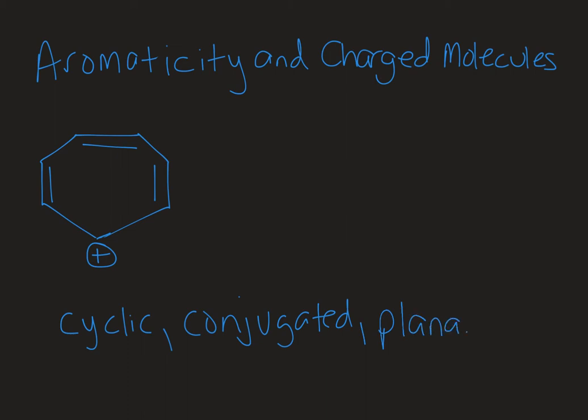And if all of those requirements are met, then we can count the number of electrons in our system and see if we have an aromatic or an anti-aromatic compound. So this molecule is cyclic, and if we assume that it's planar, the last thing we need to check is that it's conjugated.